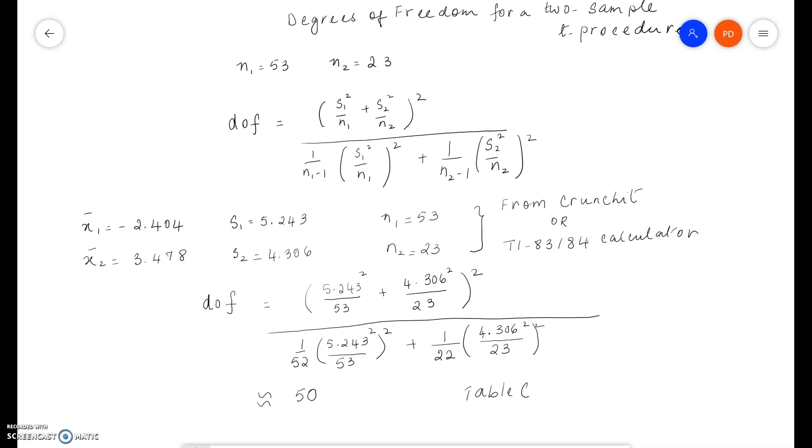Here is an example of a problem where you have to calculate the degrees of freedom and you are using a two-sample t procedure. Suppose n1 is 53 and n2 is 23, so there are two independent samples, one of size 53 and the other of size 23.